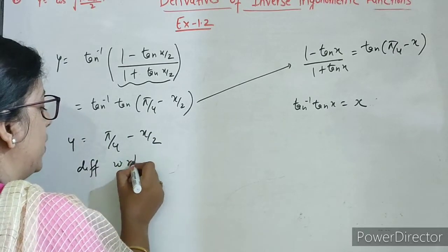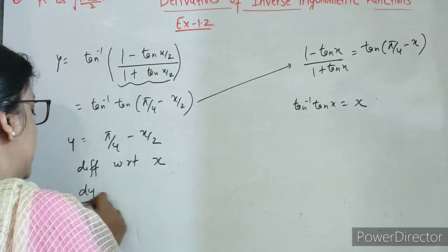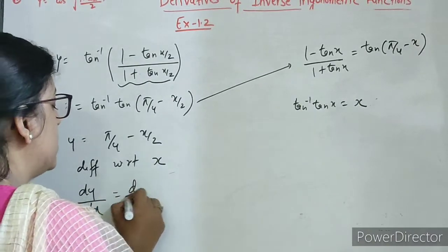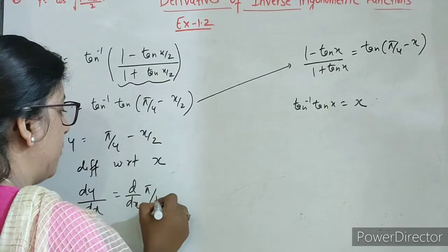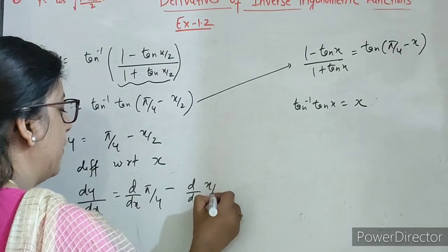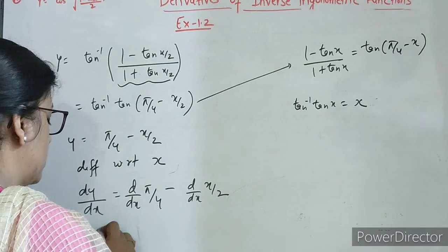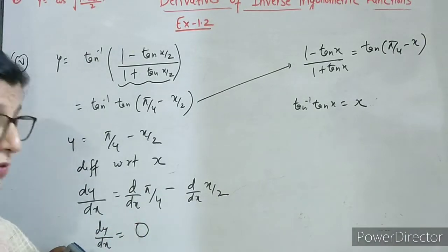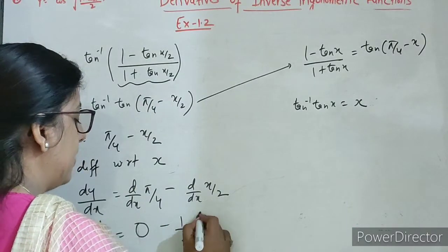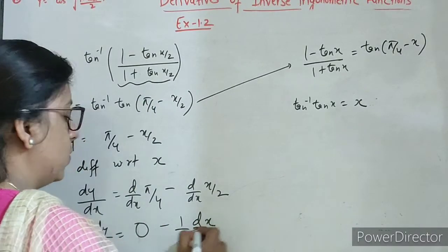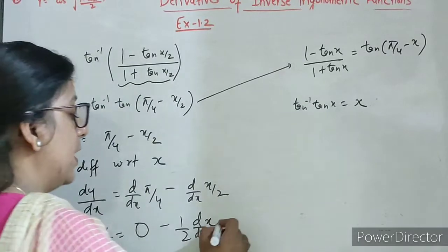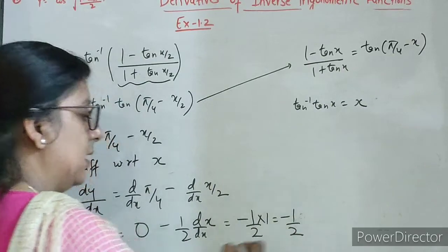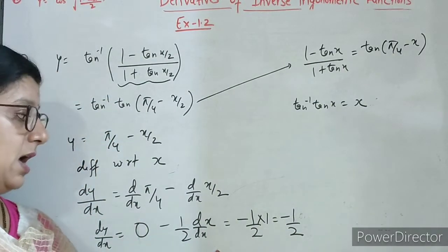Now tan inverse tan x is x — yeh property hai. So we can write here pi by 4 minus x by 2. Now differentiating with respect to x: d by dx of pi by 4 ka derivative 0, 1 by 2 constant hai bahar aa jayega, aur ye ho jayega d by dx of x. So minus half into 1 — answer is minus half.